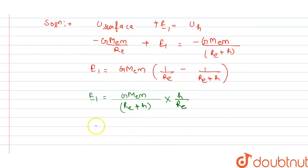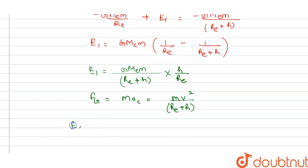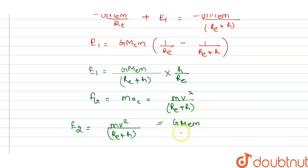For the gravitational force: Fg = ma, so GMₑm/(R+h)² = mv²/(R+h). Solving this, mv² equals GMₑm/(R+h).